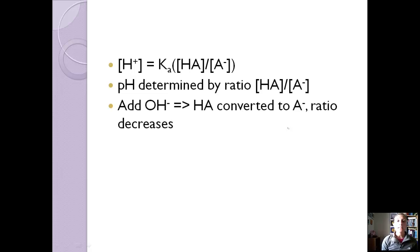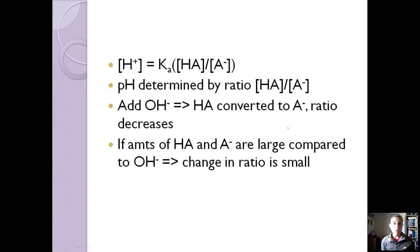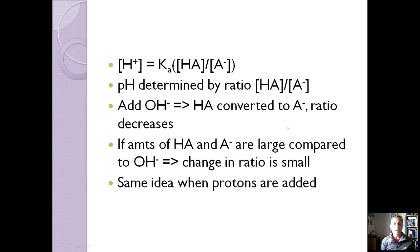If we add OH⁻, we convert the weak acid to the conjugate base and the ratio decreases because we have less HA. This would change the pH. But if the amounts of acid and conjugate base are really big compared to that OH⁻, then the change in the ratio is going to be really tiny, which means the pH isn't going to be affected as much. That's how a buffer works — and it's the same idea if we add H⁺ instead of OH⁻, where the conjugate base reacts with the proton to form the weak acid.